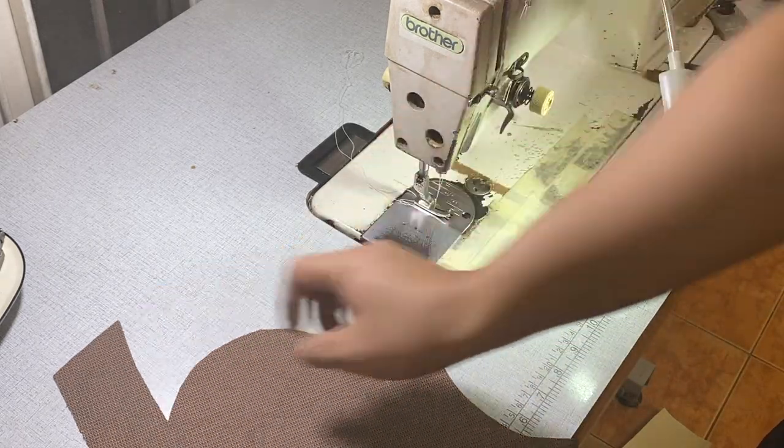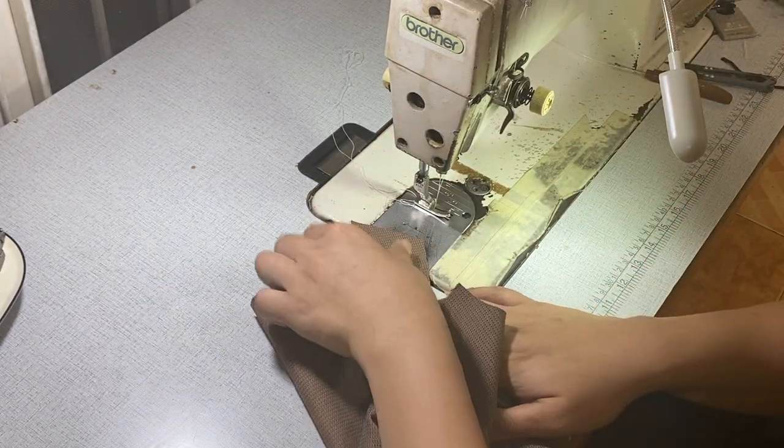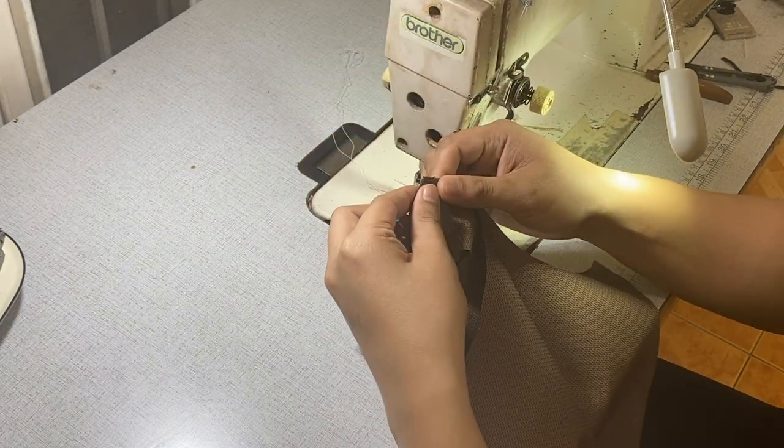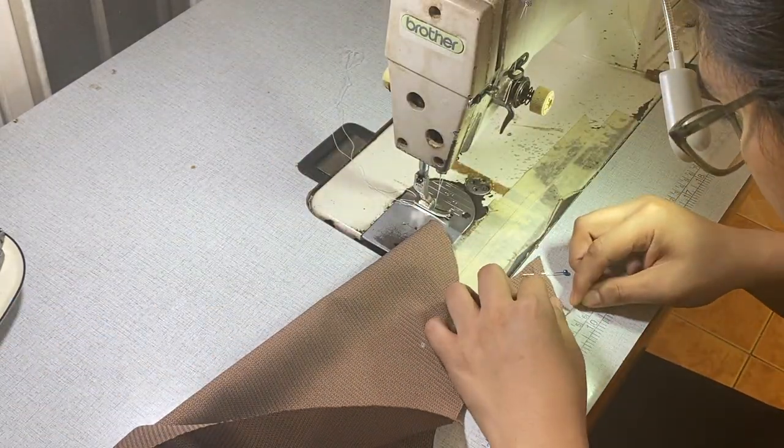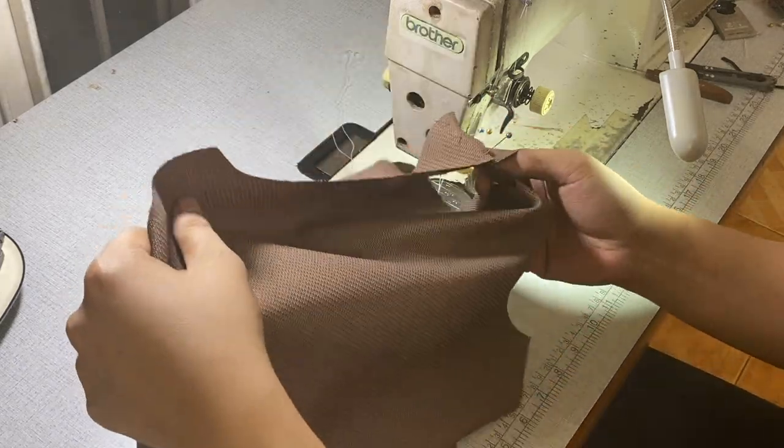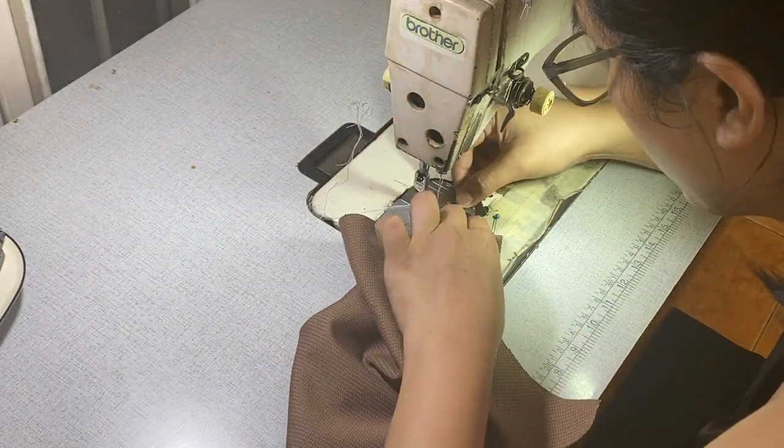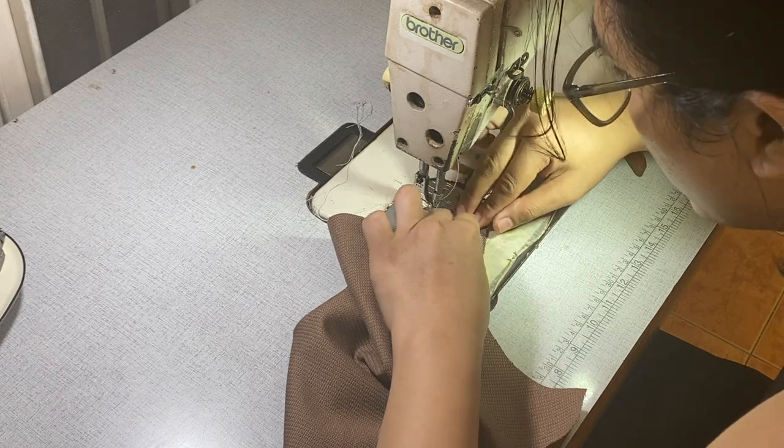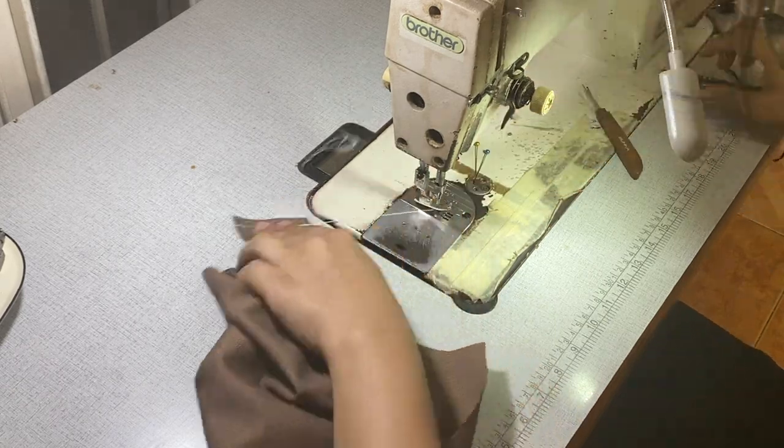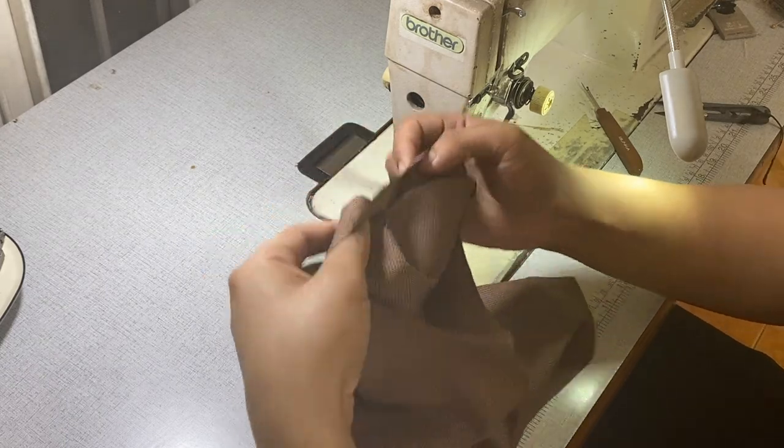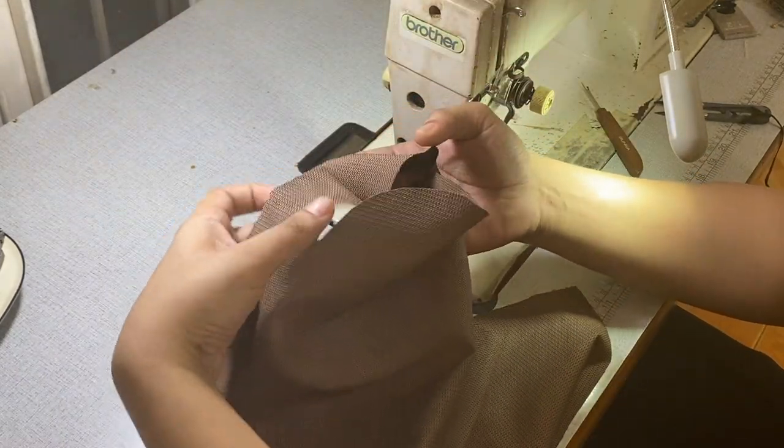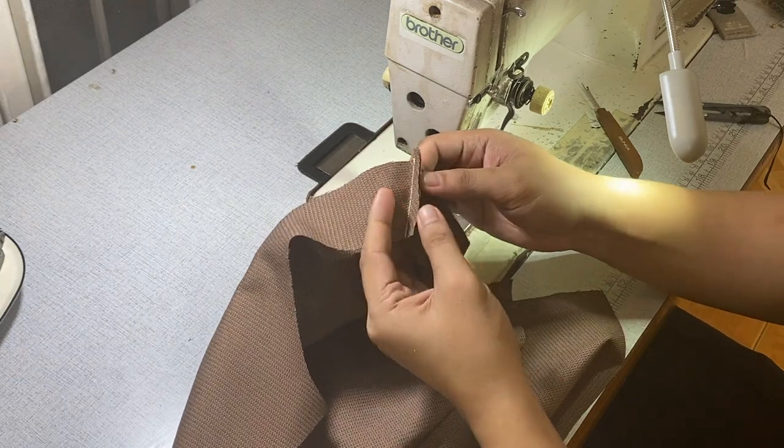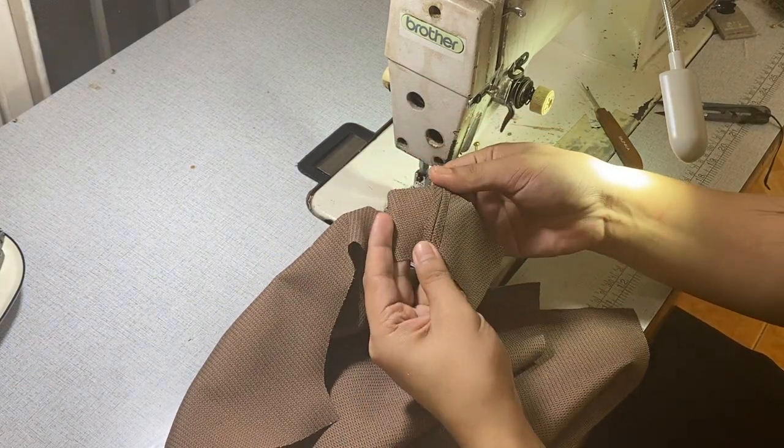The first part that we will sew are the panels. Place the panels right side to right side together and pin in place. Now, I will sew the panels together by 2/8 of an inch or 0.6 centimeter.